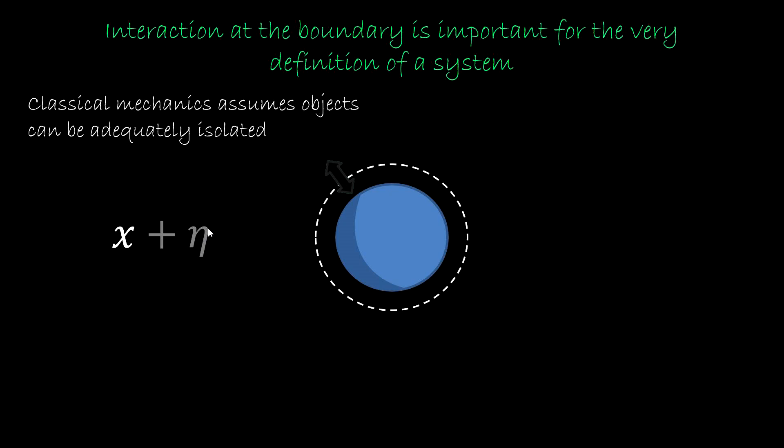If we are outside of the realm of the assumption, we can't use the model. We would have to use something else based on different assumptions, a different, more realistic characterization of the system-environment boundary. Now complete isolation is not the only assumption in classical mechanics. Classical mechanics also assumes we can study parts of the objects, as small as we want, with infinite precision.